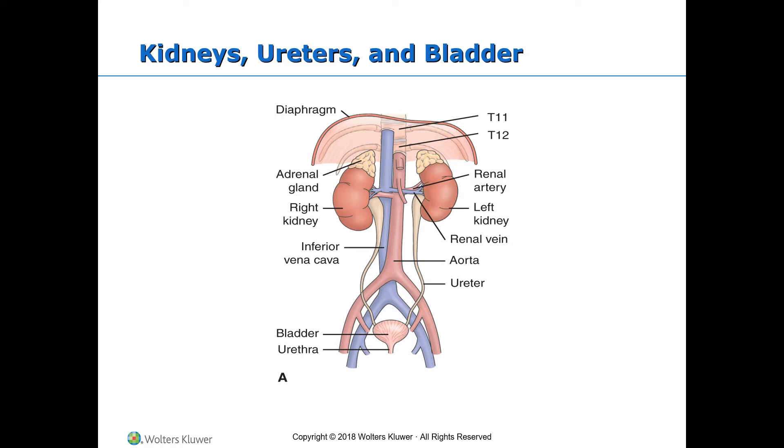During kidney transplantation, the donor kidney consists of one kidney along with a long piece of the ureter, the renal artery, and the renal vein. The donor renal arteries and renal veins are anastomosed with those of the recipient, and the ureter is inserted into the bladder of the recipient. The recipient's diseased kidney and ureter are not removed. The donor kidney is placed in the iliac fossa most often.